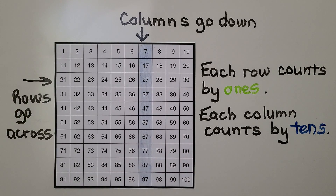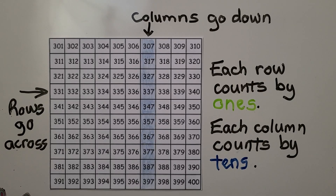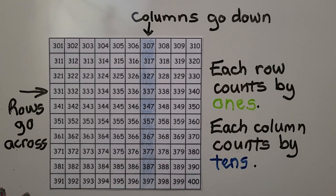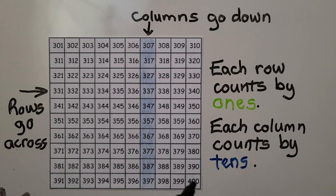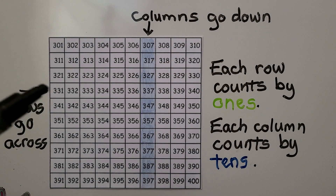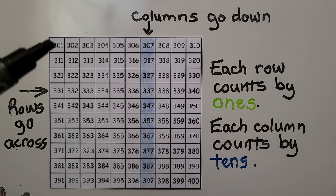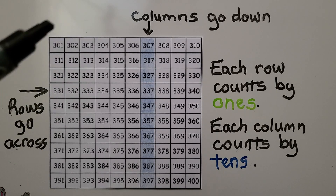Those are 10 more than the number above. This number chart starts with 301 and ends with 400. The rows that go across are still counting by 1s: 301, 302, 303 — they're going up by 1.